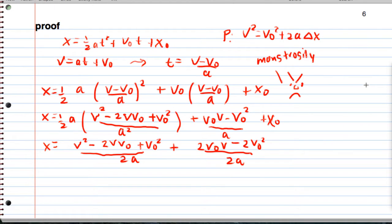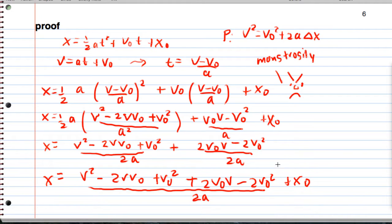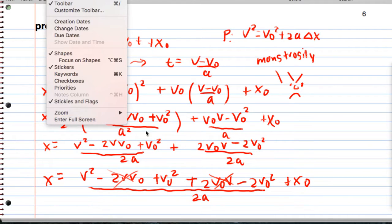So now continuing, we have x equals, let's put all this over one denominator. So we have v squared minus 2v v naught plus v naught squared plus 2v naught v minus 2v naught squared, all over 2a, really excited, plus x naught. Will this madness never end? So look, we got this canceling with that.